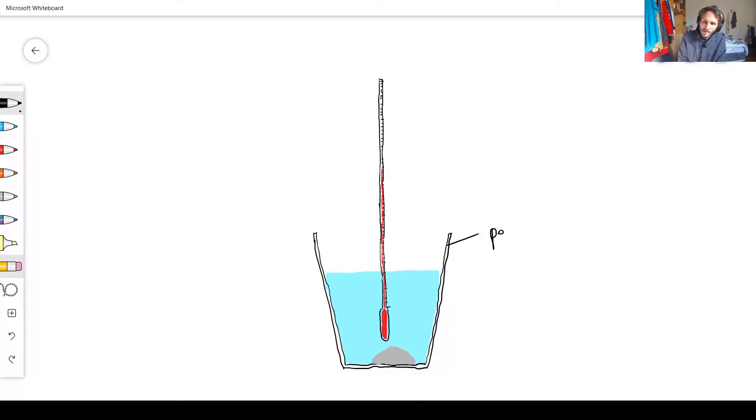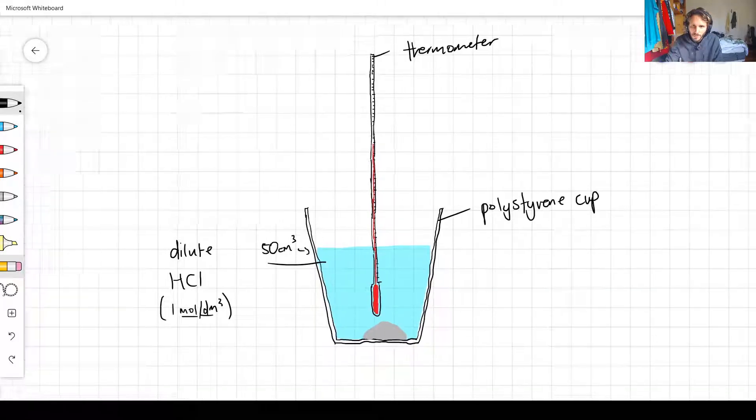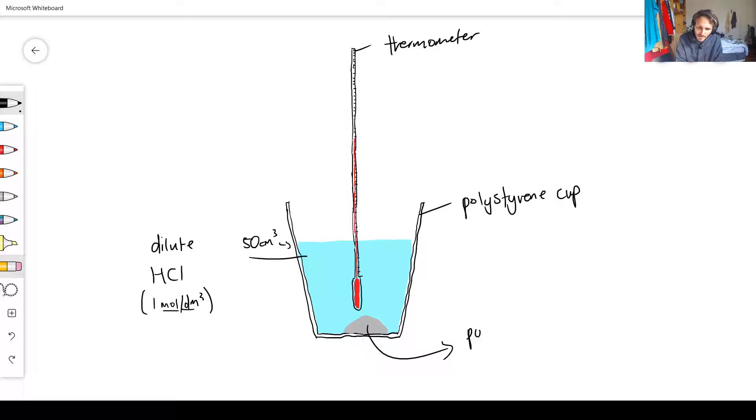So let's talk about that next reaction. We could set something up like this. Let's do some labels. This is a classic experiment that you'll see in many exams. Polystyrene cup, you've got your classic thermometer, you have got some dilute acid, this time we're going to use hydrochloric acid. It's important to keep the concentration the same so we can use one mole per decimeter cubed. We're going to measure the exact amount in terms of volume - we'll use 50 centimeters cubed.